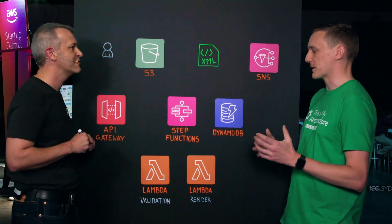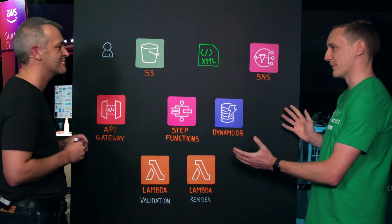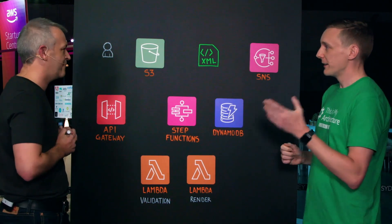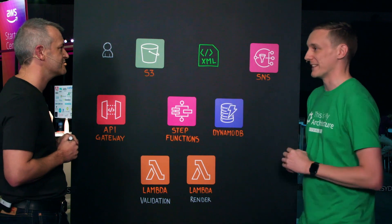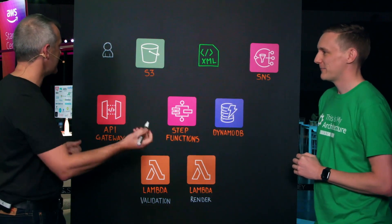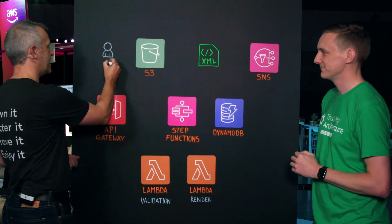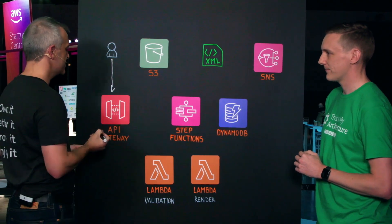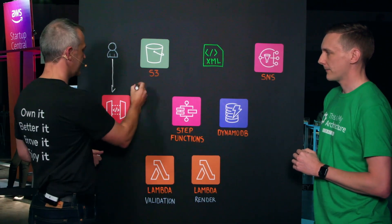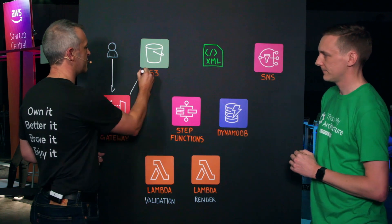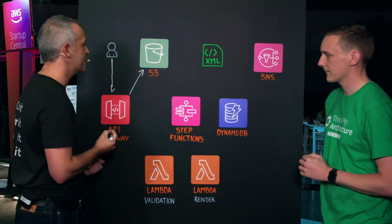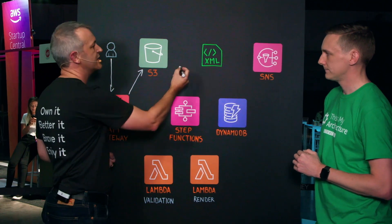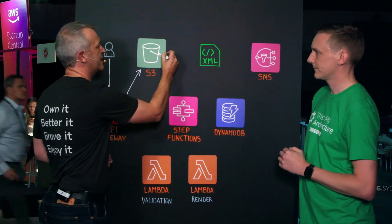So converting a very manual process into a completely serverless process. Can you walk us through it? So we might have a developer come in here, and they need to talk to API Gateway. So we've got our GeoTIFF that comes in there, it goes in from API Gateway, and it'll get stored into S3. From there, it triggers a notification to our third-party provider.